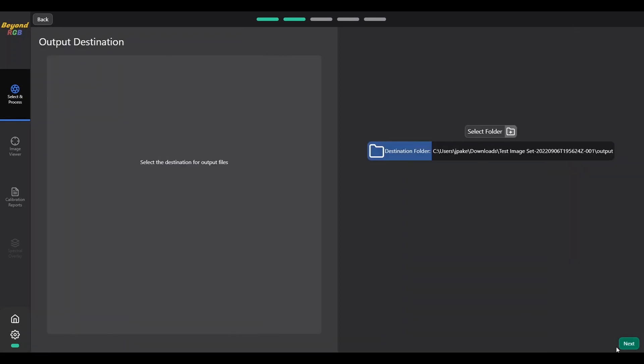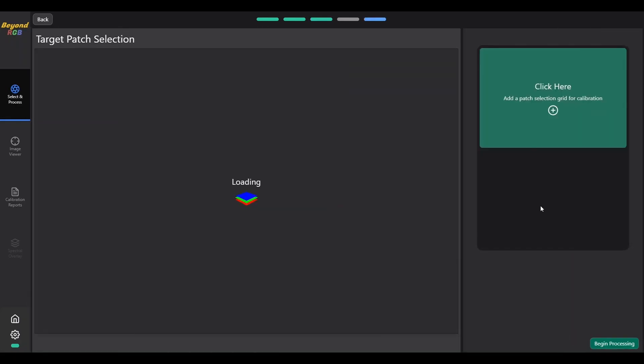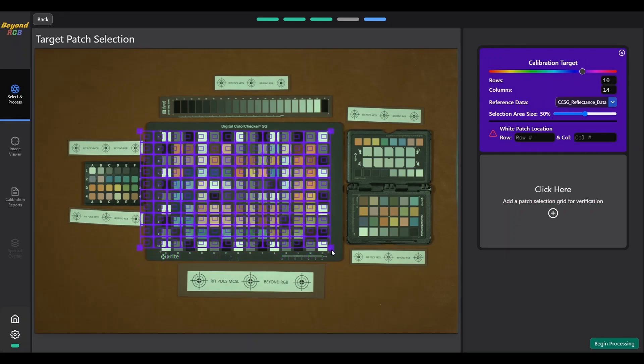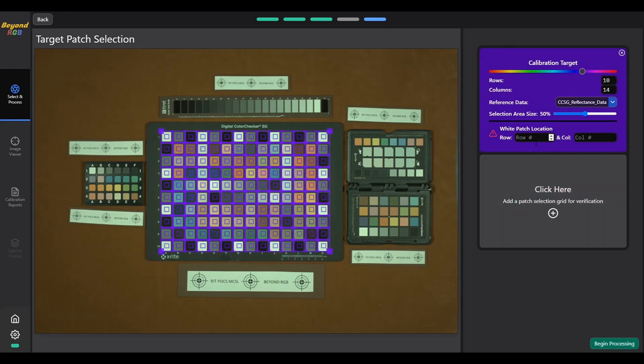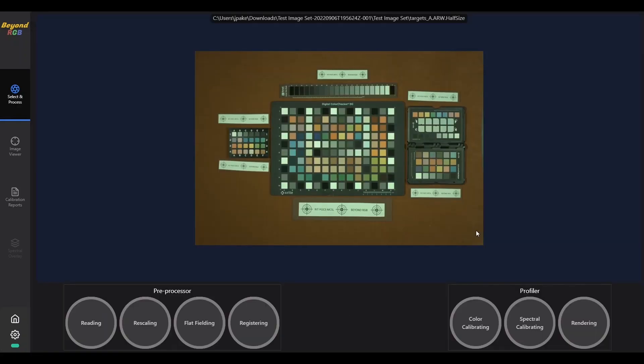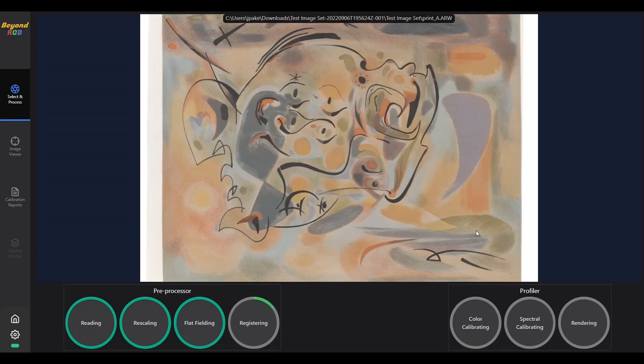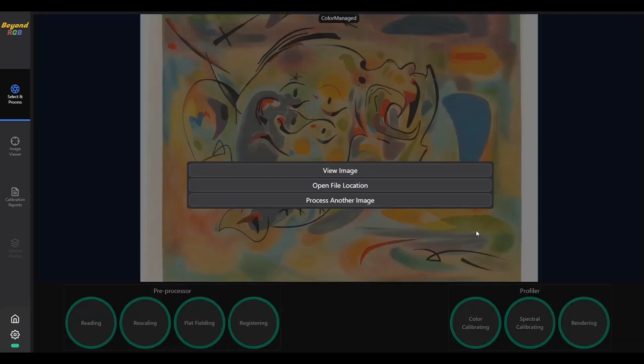However, with the right calibration of color, accounting for brightness variations, dark current corrections, and other enhancements, images can get closer to what you'd see through your own eyes. Software that does this already exists, but can be extremely expensive, especially for smaller to mid-sized museums. Beyond RGB is an open-source spectral imaging application that allows anyone with a computer to automatically calibrate images for free.